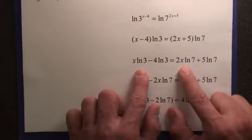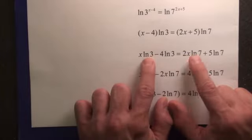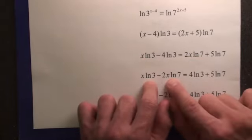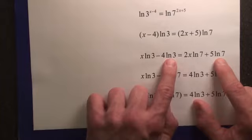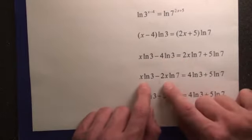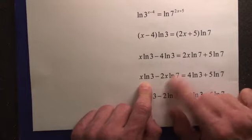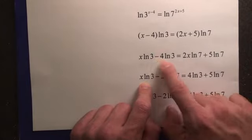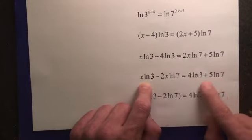Now we're going to combine the terms that have the x's. We're going to put the x's together on one side and put the ln 3 and ln 7 on the other side, the ones that do not have an x. So we're going to put the ones that have an x together. So you're going to subtract the 2x ln 7. You're going to add the 4 ln 3.